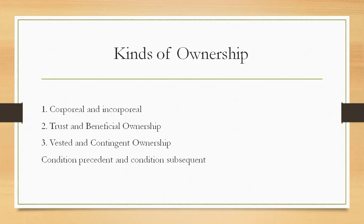Then we read about vested and contingent ownership. Ownership is either vested or contingent. It is vested when the owner's title is already perfect. It is contingent when the title is imperfect but is capable of being perfected on the fulfillment of some condition. In the former case, he owns the right absolutely; in the latter, he owns it only conditionally.